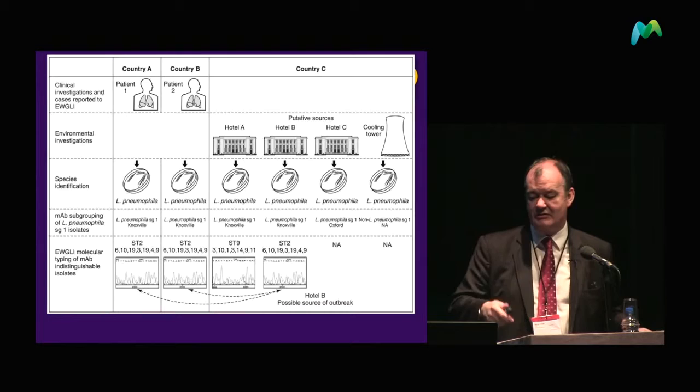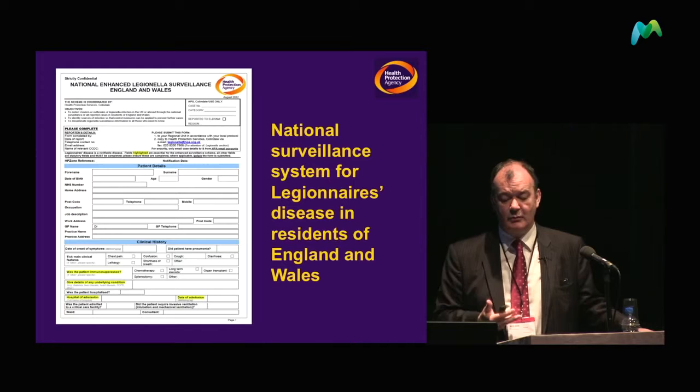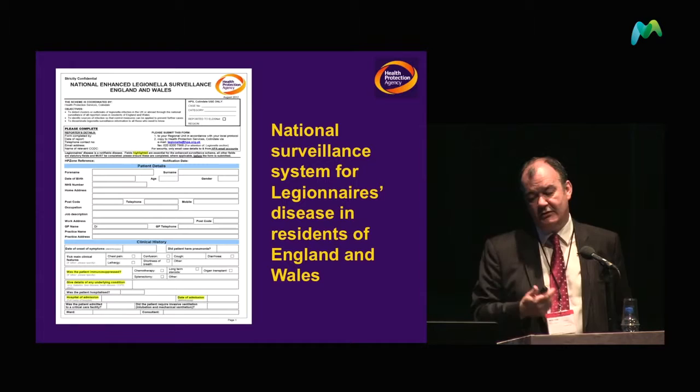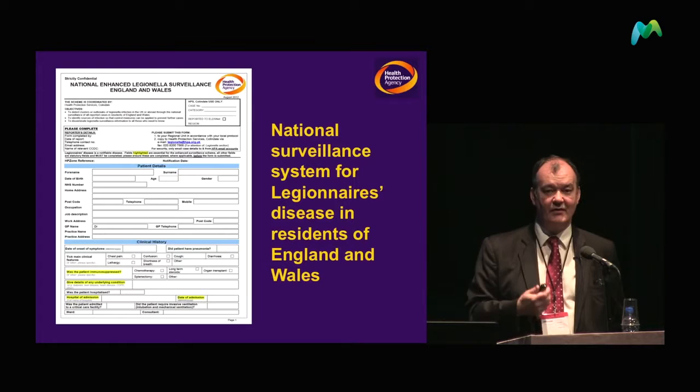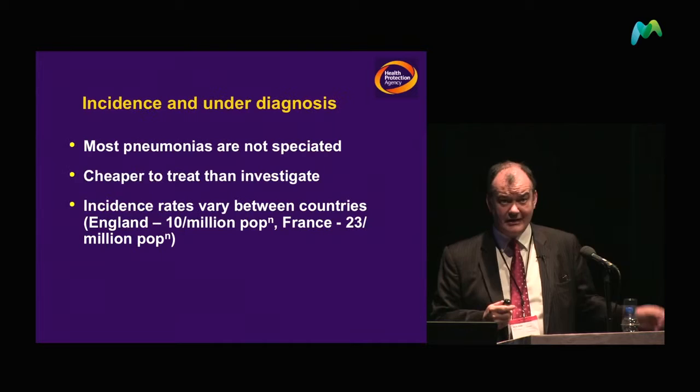That is really the basis of what we try to do when investigating potential outbreaks — piecing together evidence to link clinical and environmental cases. The surveillance form is about six pages long. In it we try to collect useful information about what the patient has done and where they've been in the 14 days prior to the onset of illness. We're looking to use this to identify specific ST subtypes based on severity, but we're not at that stage yet.